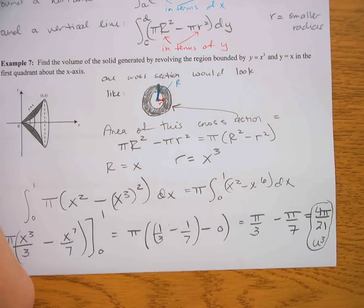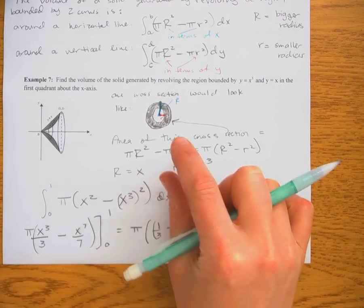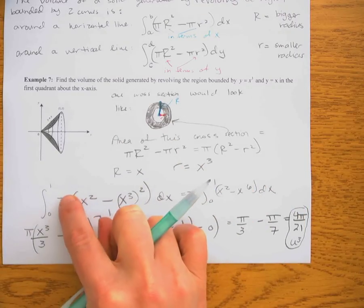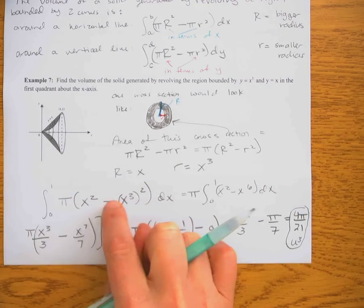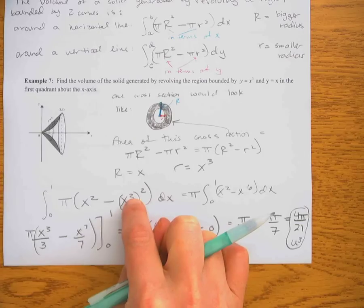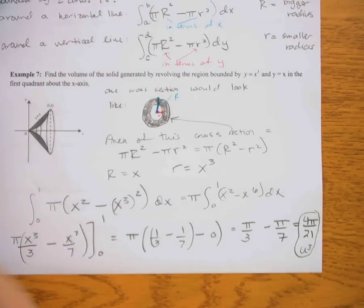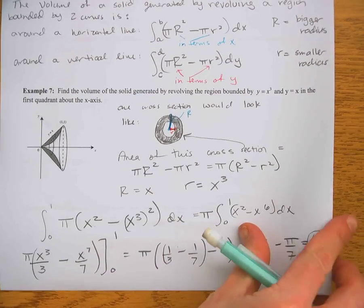So for example 7, we just took the area of the larger circle — pi times x squared — minus the area of the smaller circle — pi times (x cubed) squared — and then integrated all of that. Now let's go to the next example.